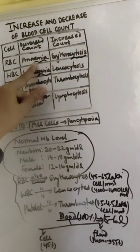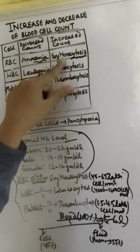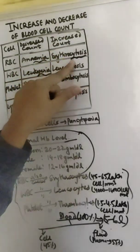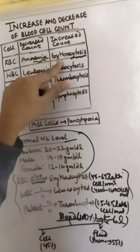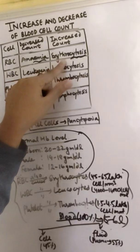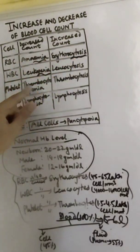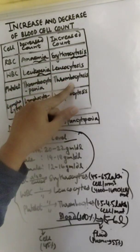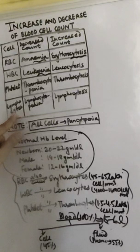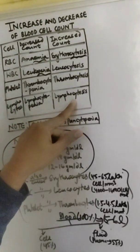So RBC decreased count is anemia and increased count is erythrocytosis. Already I have told that another name of RBC is erythrocytes, so cytosis is what is written in increase. WBC, leukopenia and leukocytosis. Platelet, thrombocytopenia and thrombocytosis. And lymphocytopenia and lymphocytosis.